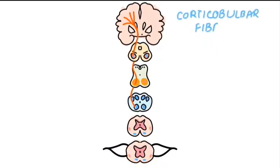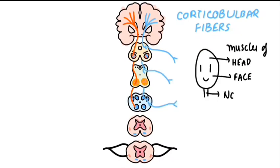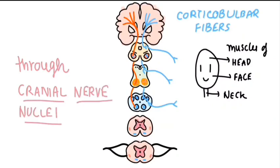Corticobulbar fibers synapse with their lower motor neurons within different parts of the brain stem, namely with the motor nuclei of cranial nerves. They go on to give bilateral supply to the muscles of the face, head, and neck, with unilateral supply to some of the lower facial muscles.